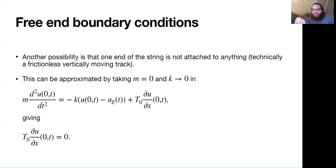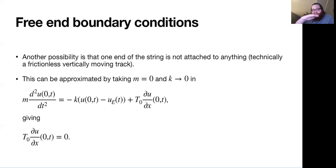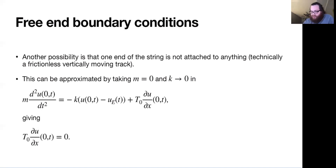Right now you have this free motion of the string, which if you look at the profile of solutions to the heat equation — especially equilibrium solutions — you're requiring them to be flat at the ends and sure they can move freely, but as long as it's flat. And essentially that's what's happening here as well. So that's it on these dynamic boundary conditions.